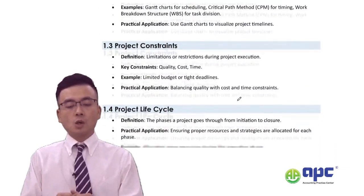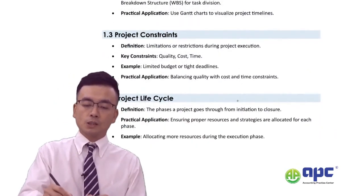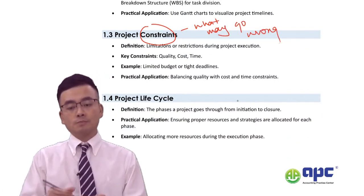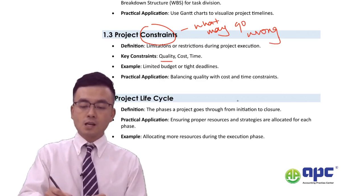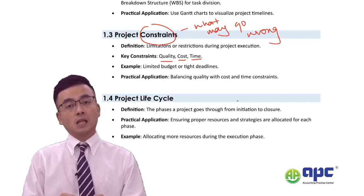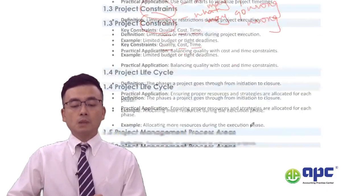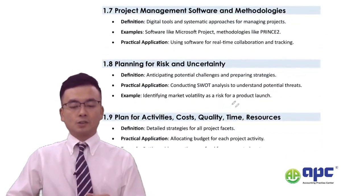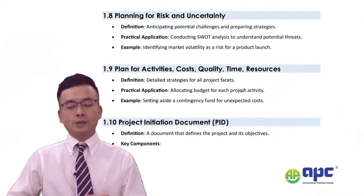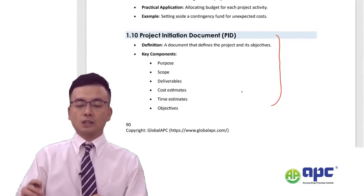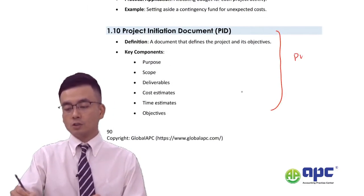Of course, we have certain constraints — what may go wrong. Quality may go wrong, costs may be overrun, and time may need to be extended. We also have different software tools, and we need to plan by putting everything into the project initiation document, also called the project charter.